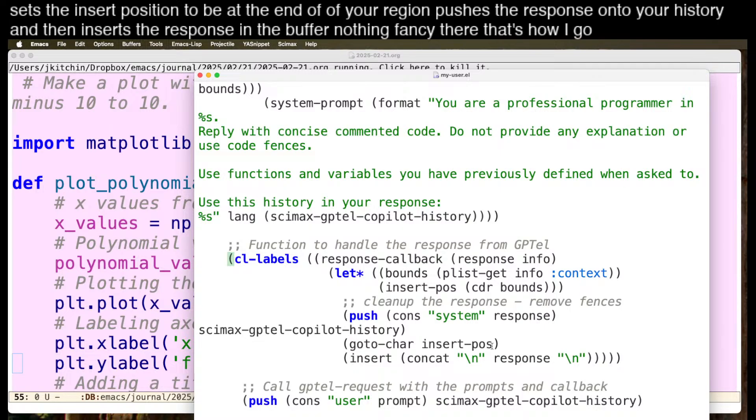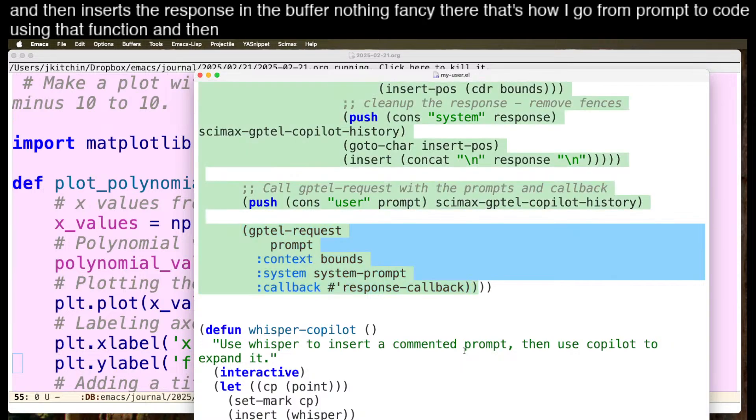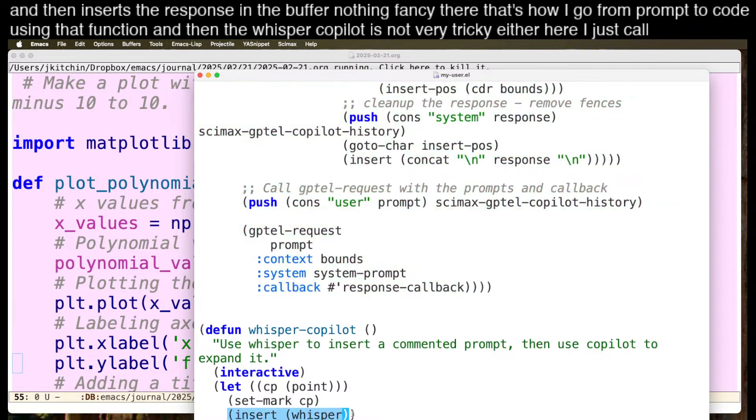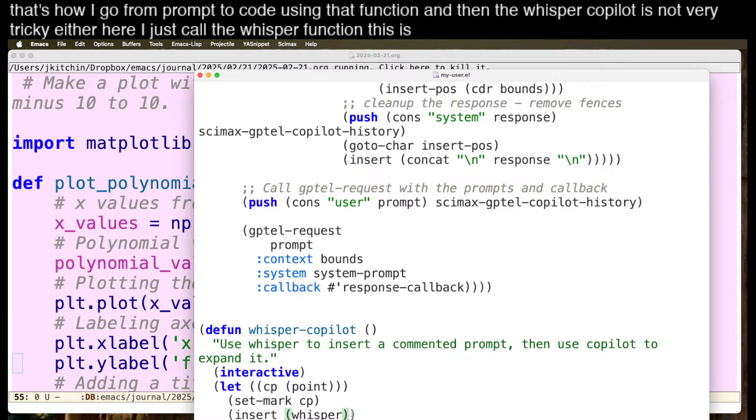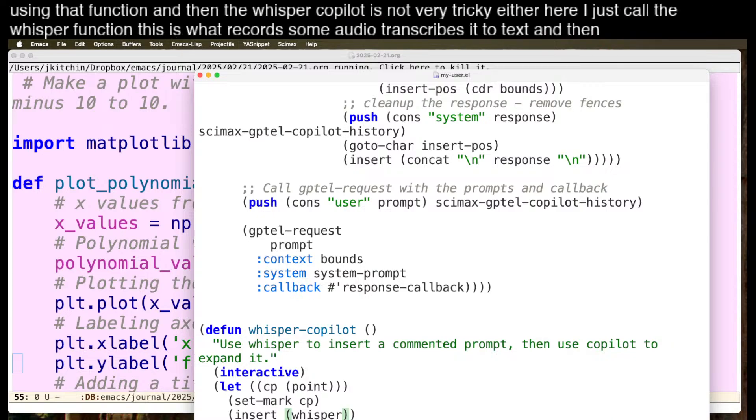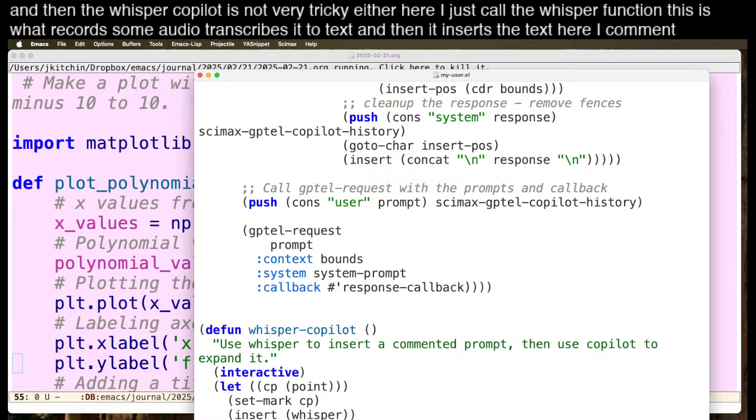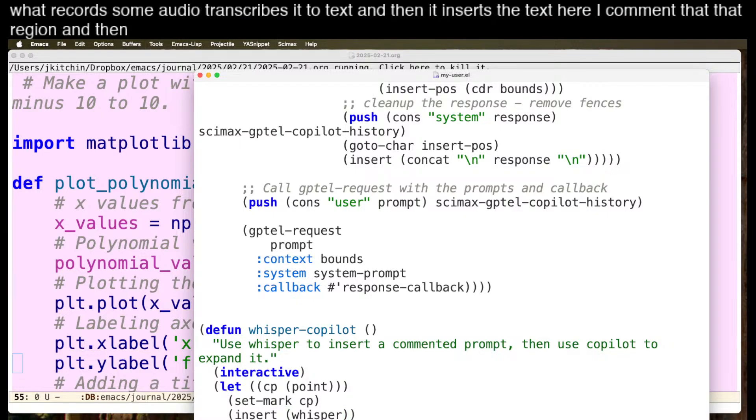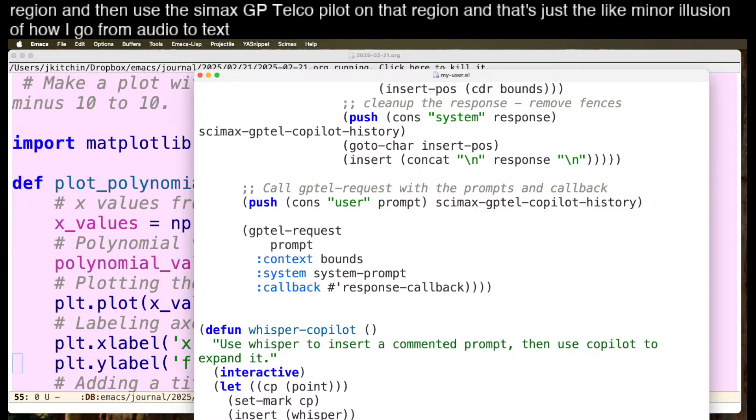That's how I go from prompt to code using that function. And then the whisper copilot is not very tricky either. Here I just call the whisper function. This is what records some audio, transcribes it to text, and then it inserts the text. Here I comment that region and then use the SciMax GPTEL copilot on that region. And that's just the minor illusion of how I go from audio to text to code for that.